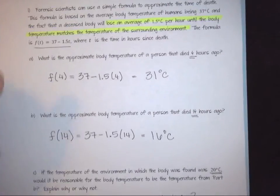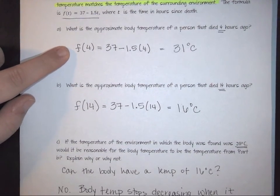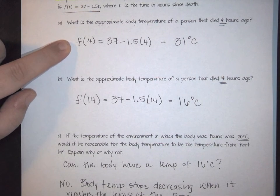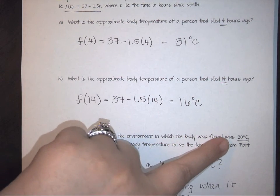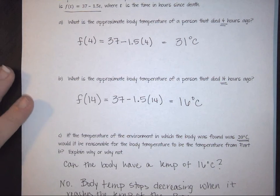Now as a side, could we have the temperature of part A? Well, the answer there would be yes, because 31 degrees is bigger than the 20 degrees that my room is at. Therefore, it would be feasible that you would see that temperature.